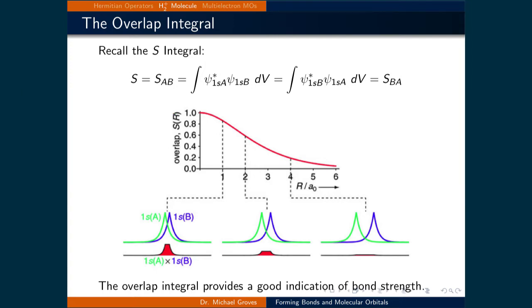The overlap integral gives a good indication of bond strength, since high overlap means high ability for the electron to be shared, and low overlap means low ability for the electron to be shared.